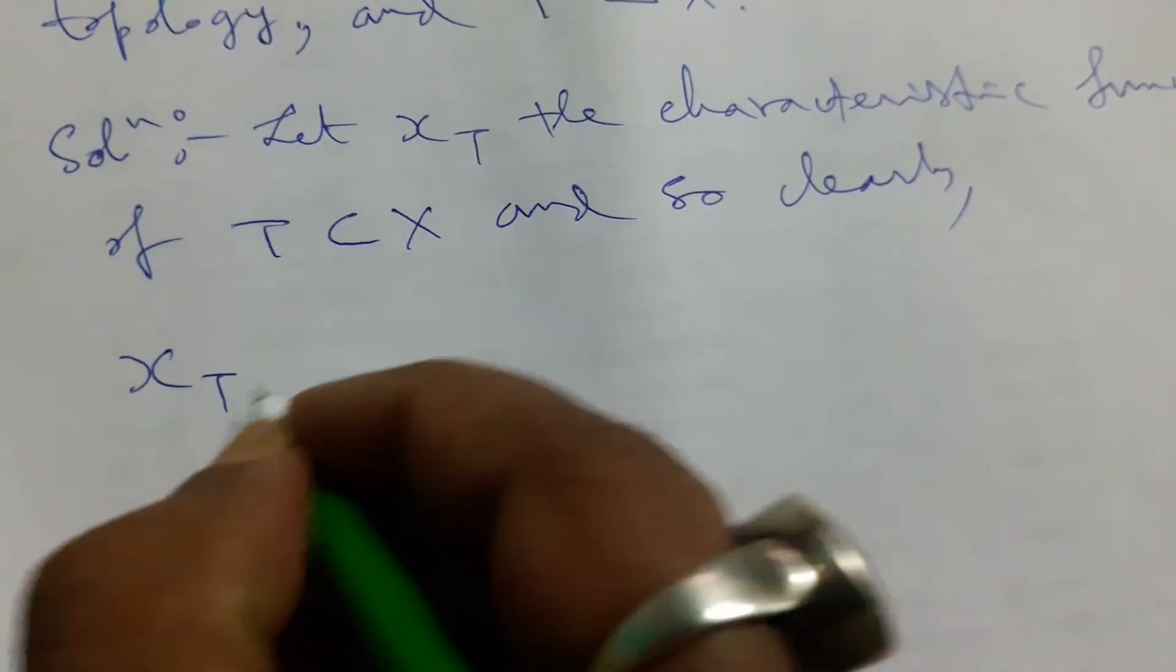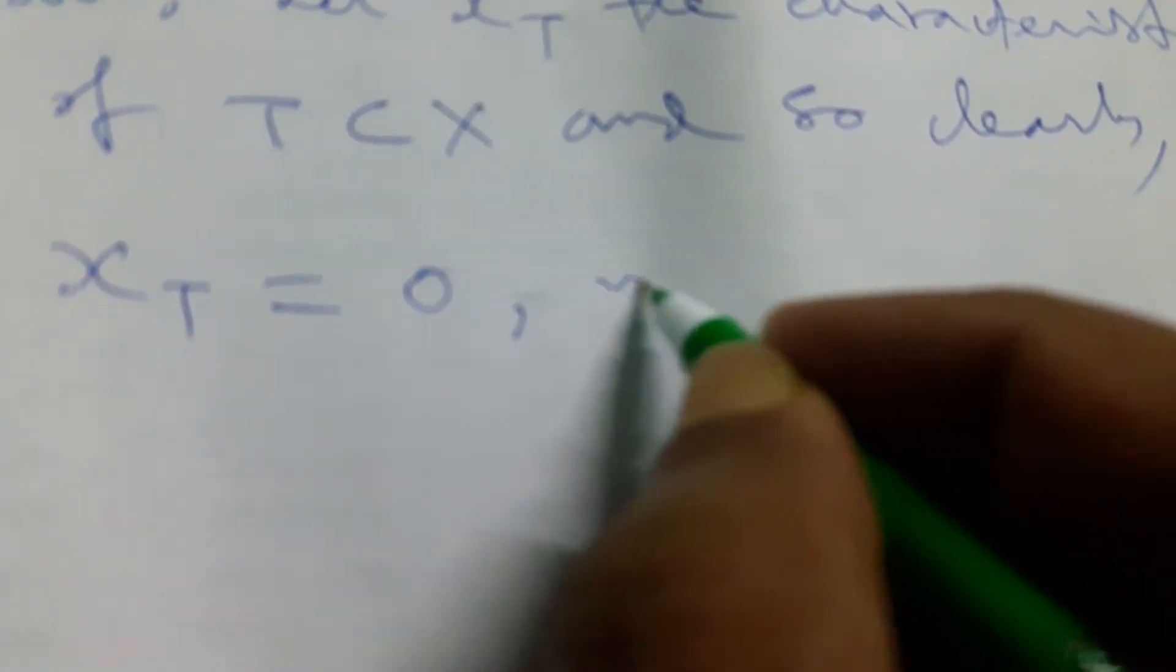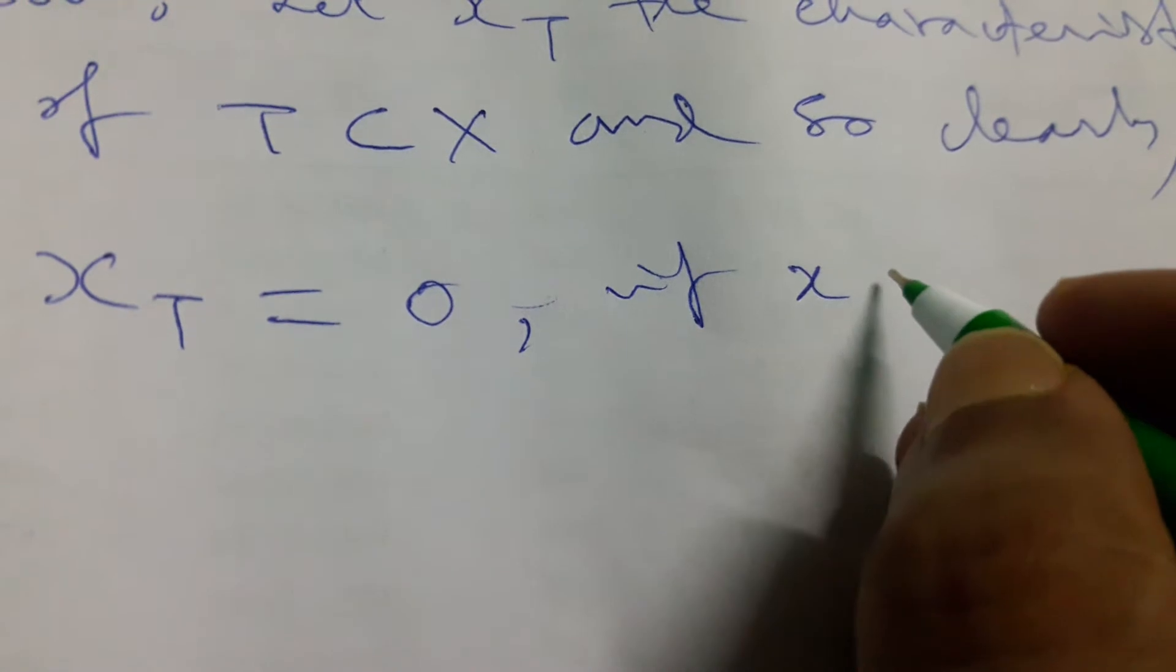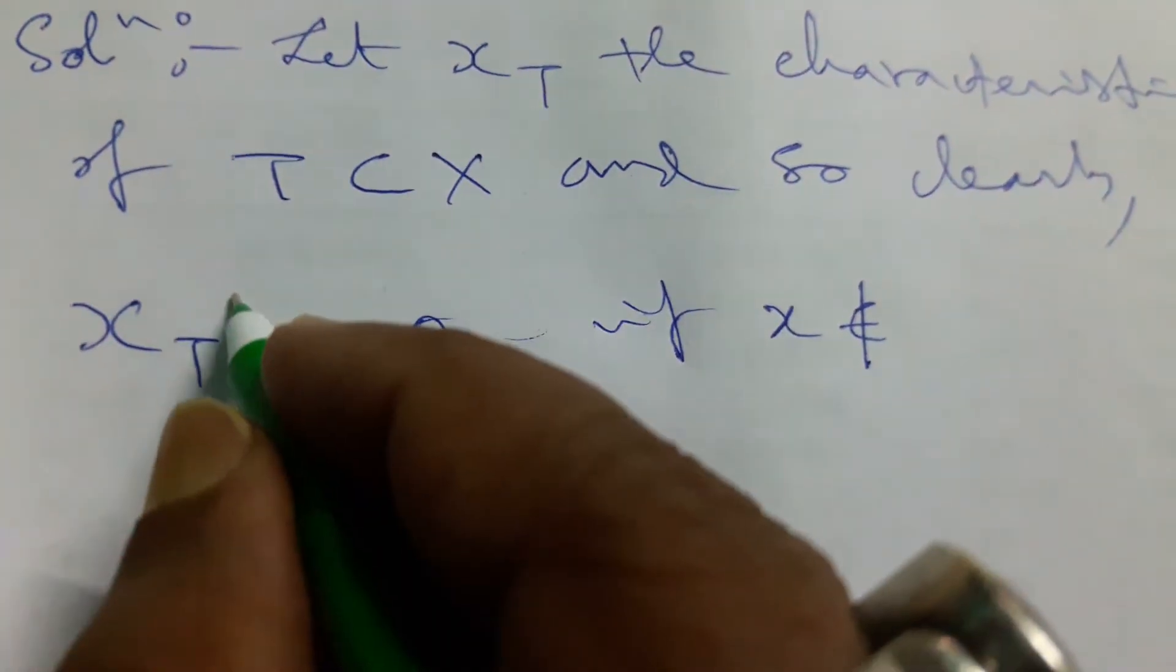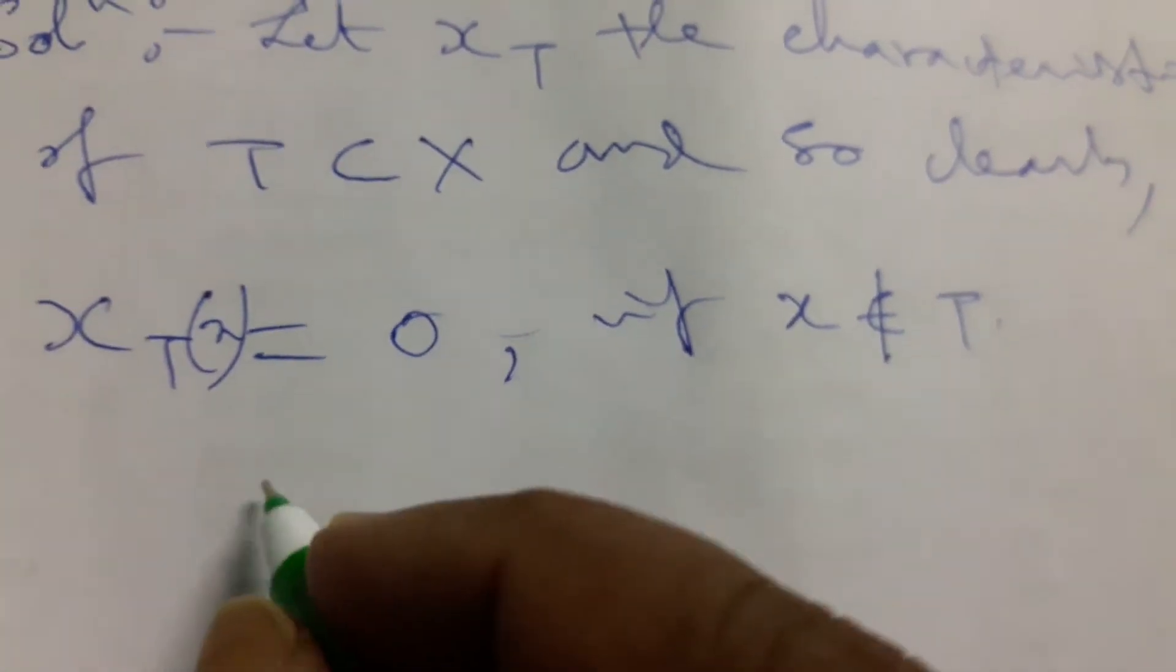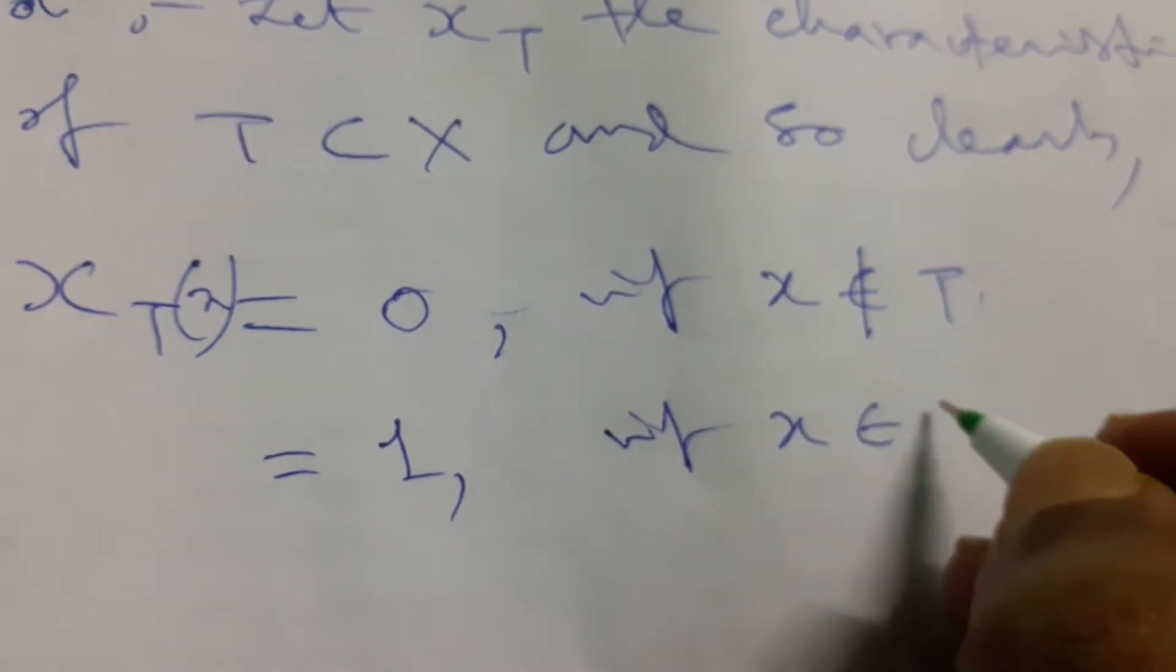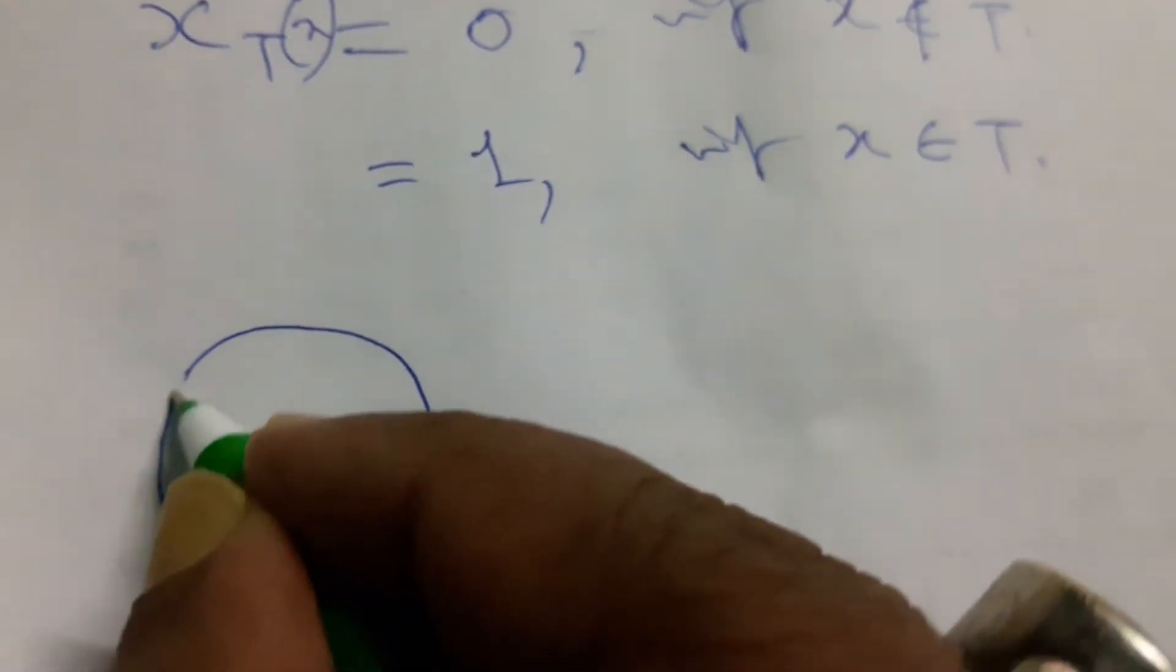this χ_T(x) must be 0 if this element x doesn't belong to T. Better to say χ_T(x) equals 1 if x belongs to this element T, and 0 if x is outside T. This is our definition. Let us go to the presentation.